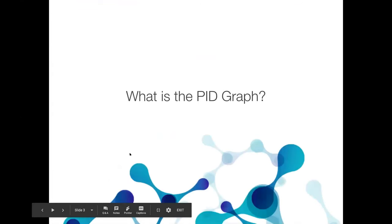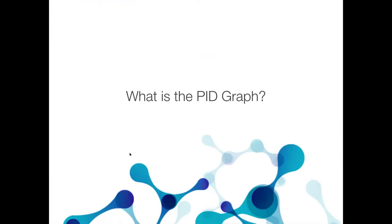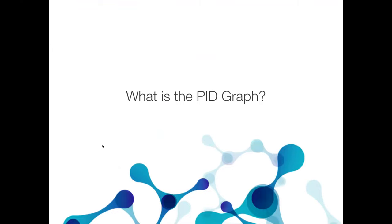My part is to introduce what the PID Graph is, because this is a tricky concept we've taken from one of our EU-funded projects, the FREA project, and it's causing some confusion. So we're going to talk about what the PID Graph actually is. The approach we use in FREA is thinking about research as already being a graph. Researchers, institutions, publications, datasets — all that stuff is already connected just by virtue of being created by different people and being related to different people. All of those entities and relationships already form a conceptual graph of the connected research landscape.